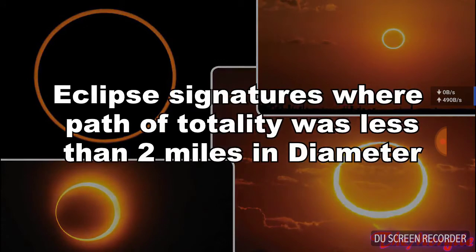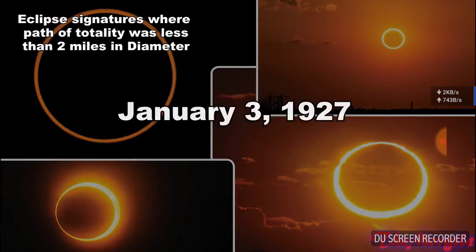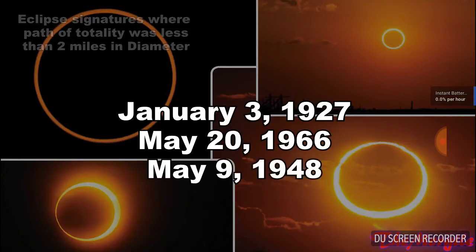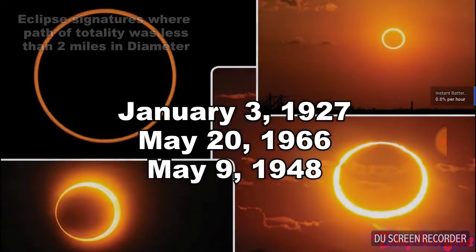The dates of those eclipses were January 3rd, 1927; May 20th, 1966; and May 9th of 1948.